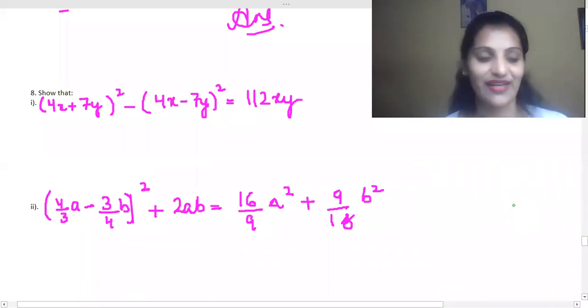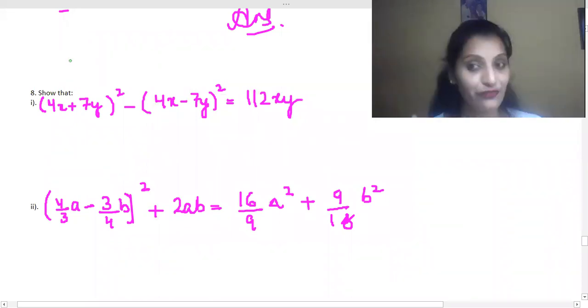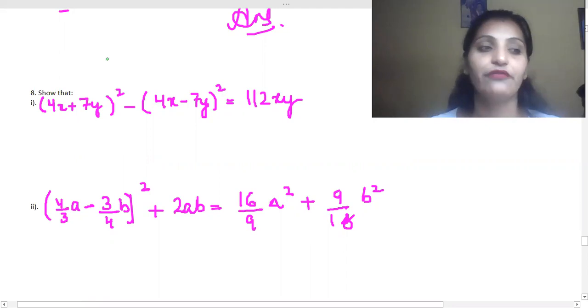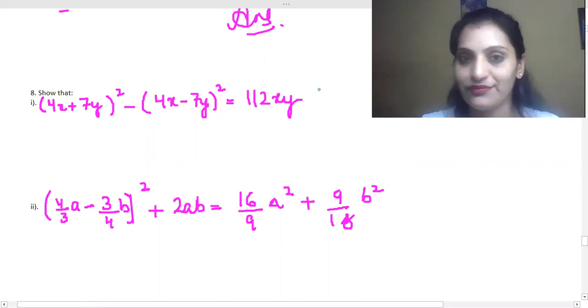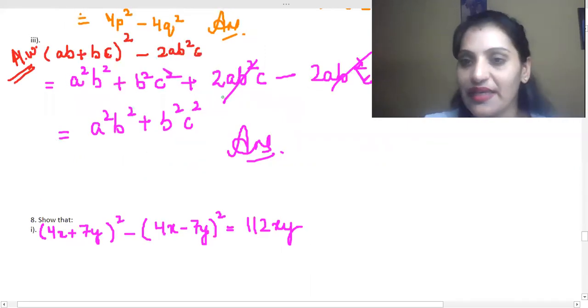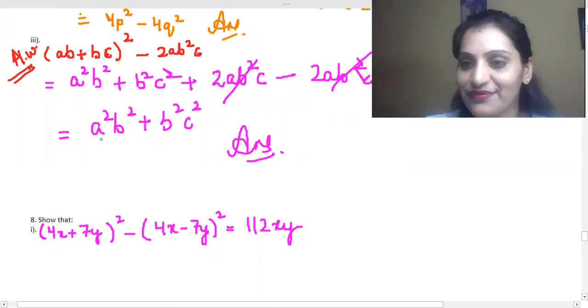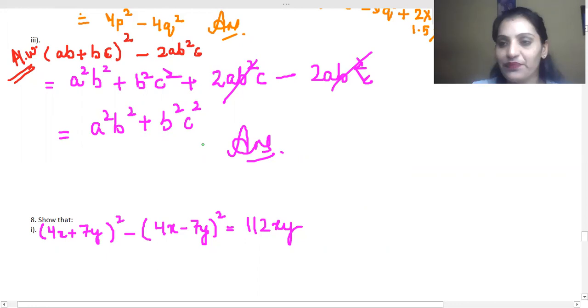So, we were doing exercise 9.4 at question number 8. The first part is 4x plus 7y whole square minus 4x minus 7y whole square is equal to 112xy. Yes, ma'am homework. Ma'am homework. Ma'am no, ma'am. I haven't tried it. Okay, no issues, ma'am. This was very easy. I'm telling you that the credit you gave me.